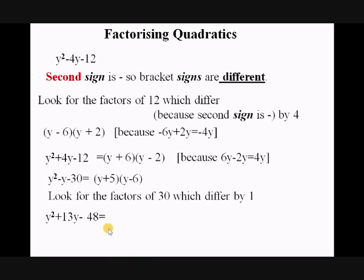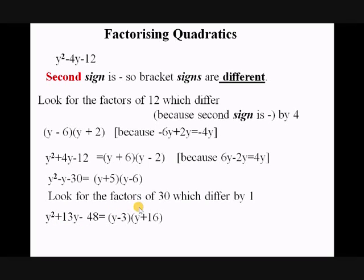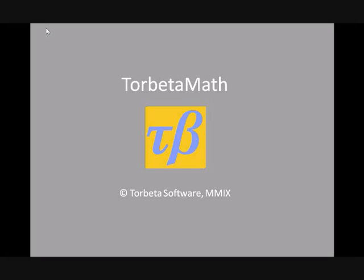Another example: we have different bracket signs, and we're looking for the factors of 48 which differ by 13. We come up with 3 and 16: 3 × 16 = 48 and 16 − 3 = 13. Because we want plus 13, we put the plus sign in front of the biggest factor — 16. So it's (y − 3)(y + 16). And that's factorizing quadratics. Thanks for watching.